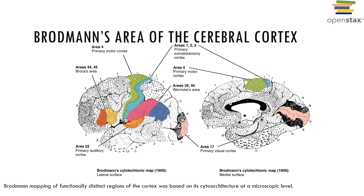Broca's area, also known as the speech center, is located anterior to the lower part of the premotor cortex. It is involved in directing motor speech, including thinking about or planning to speak, and generally is present in only one hemisphere, typically the left. The frontal eye field is located anterior to the premotor cortex and superior to Broca's area; this region controls voluntary movements of the eye and has no role in the interpretation of visual stimuli.